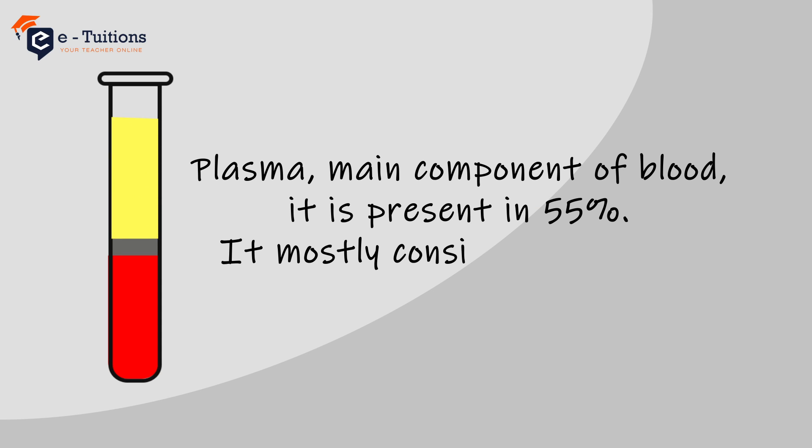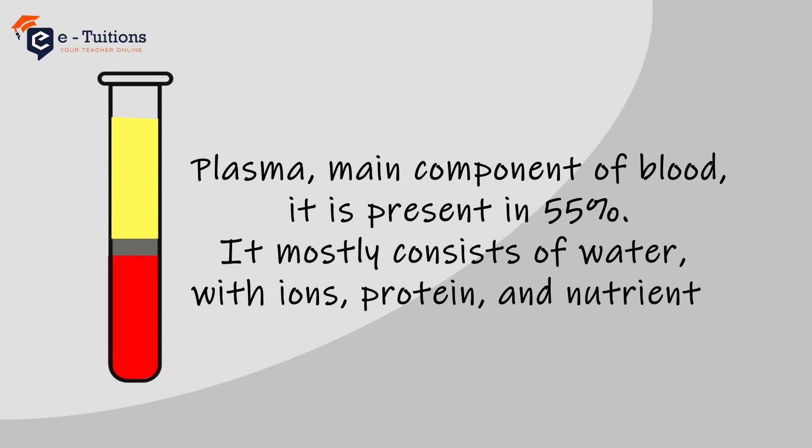Plasma is the main component of blood. It is present at 55%. It mostly consists of water with ions, proteins and nutrients.